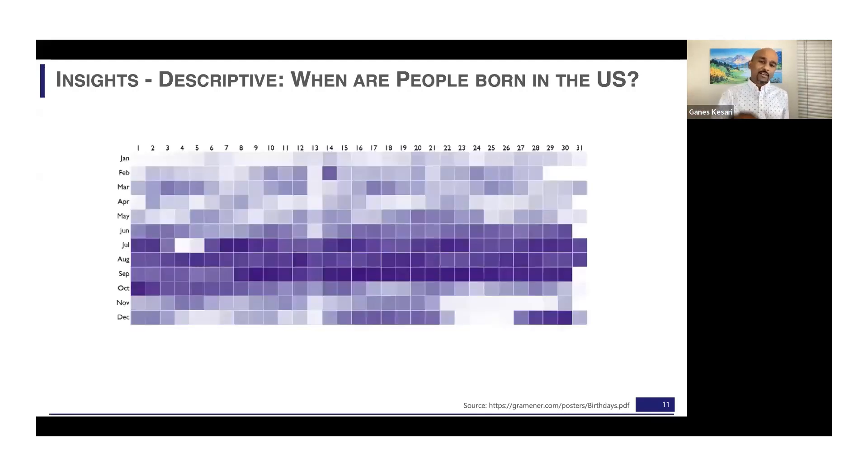We created this visual with the data, so you have the months laid out across the rows, January to December, and you have the days of the month, first to the 31st. High number of births is a dark shade itself, lower births is closer to white. What do you notice here? Most births seem to happen between July and September. September actually has a very high birth rate. You can see the shades consistently dark.